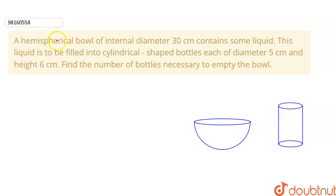Hello students, our question is: A hemispherical bowl of internal diameter 30 cm contains some liquid. This liquid is to be filled into cylindrical shaped bottles, each of diameter 5 cm and height 6 cm. Find the number of bottles necessary to empty the bowl.